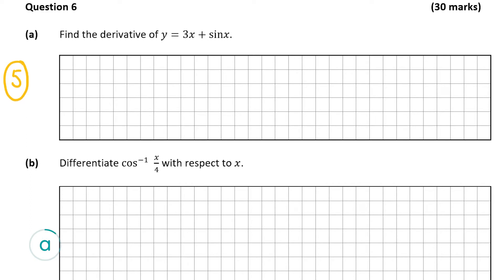The first thing we're going to do is differentiate 3x. Remember if we have a term x to the power of n, that goes to n times x to the power of n minus 1 when you differentiate it. Here n is 1, so it's 1 times x to the power of 0, and x to the power of 0 is just 1, so 1 times 1 is 1. In our case it's 3 times 1 which is just 3, so dy/dx is equal to 3. But we also have to differentiate sine x.